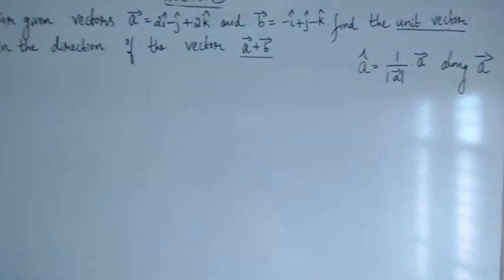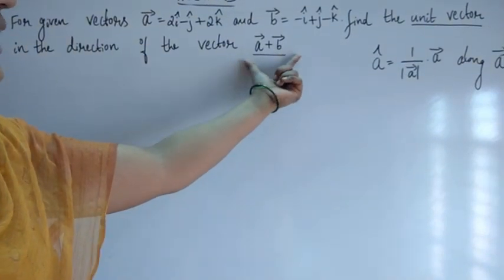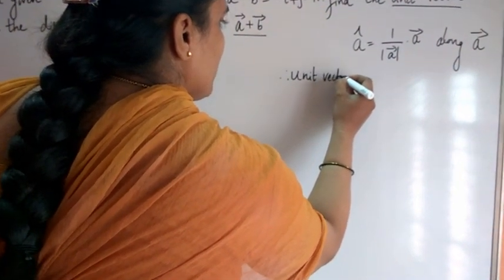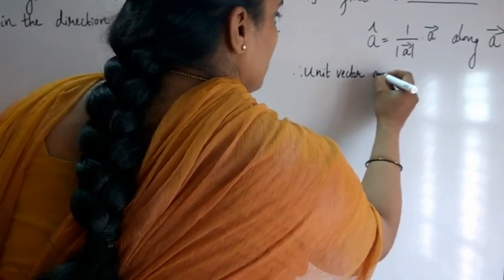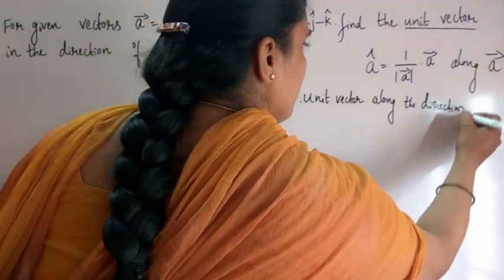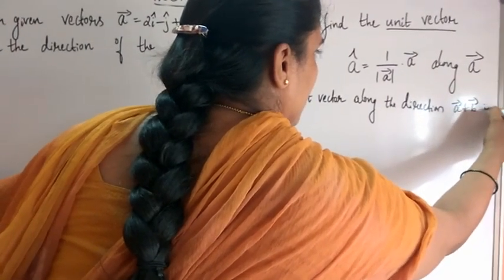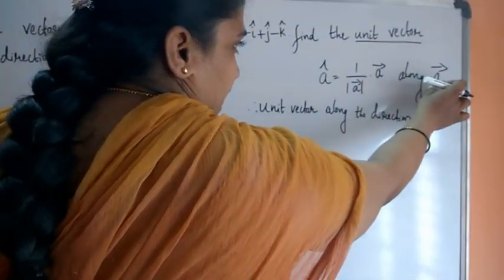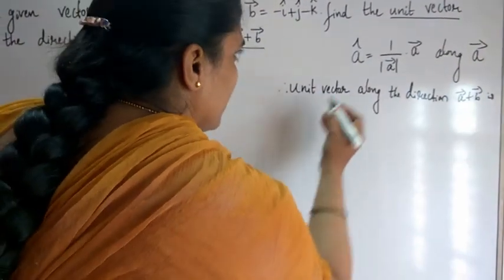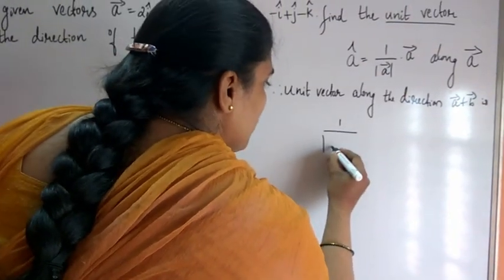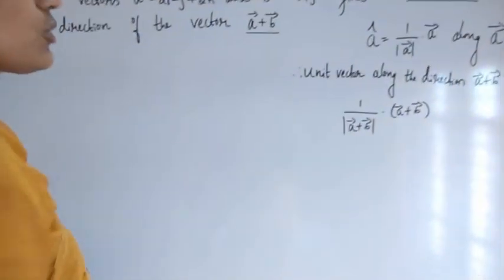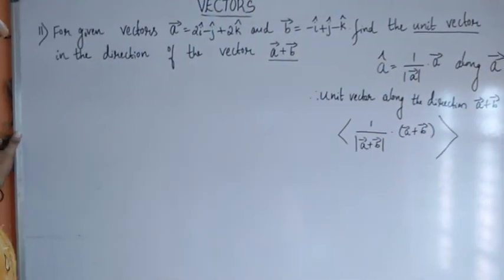Here we have to find the unit vector but the direction is changed — the direction is vector A plus vector B. So to find the unit vector along the direction of vector A plus vector B, we replace vector A by vector A plus vector B in the formula. The formula becomes: 1 by magnitude of (vector A plus vector B), into (vector A plus vector B). This is the formula to find the unit vector along vector A plus vector B.